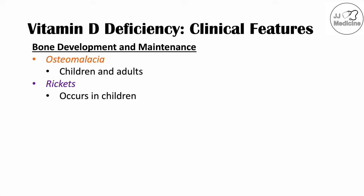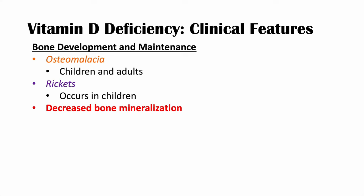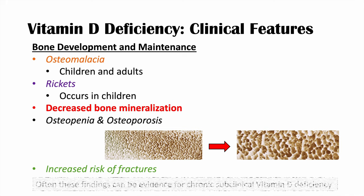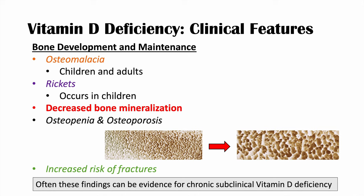These topics require their own lessons, which I'll cover in the future. Overall, because of extensive bone resorption, we get decreased bone mineralization, which can cause osteopenia and osteoporosis. With osteoporosis, a normal bone becomes very porous — weaker — with an increased risk of falls and fractures. These findings can be evidence for chronic subclinical vitamin D deficiency, where bones gradually weaken over time without acute symptoms.